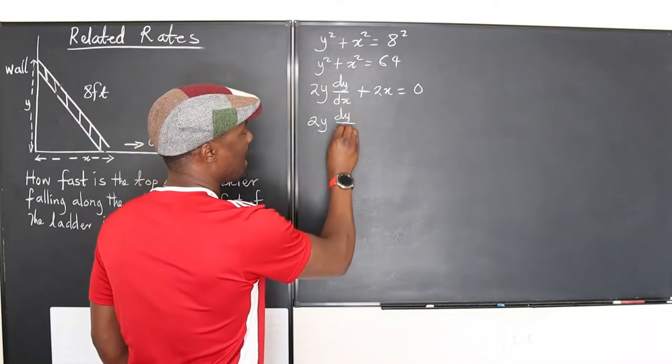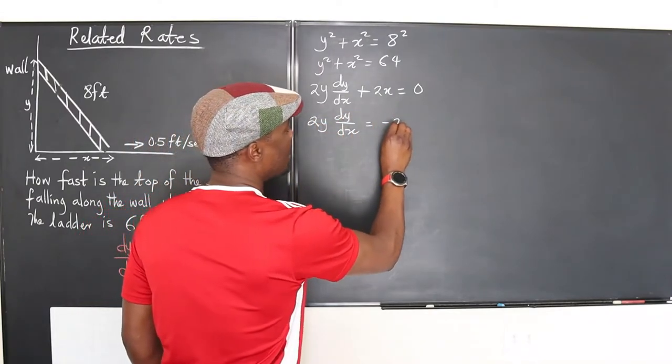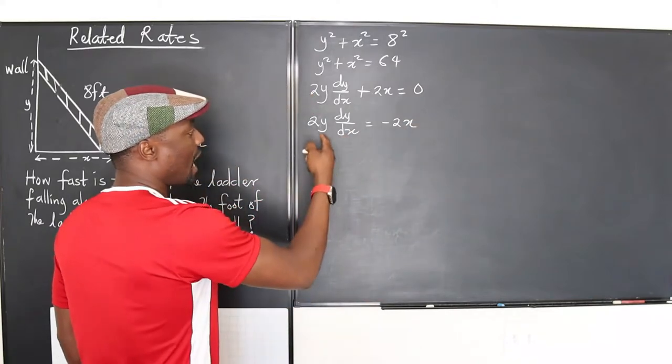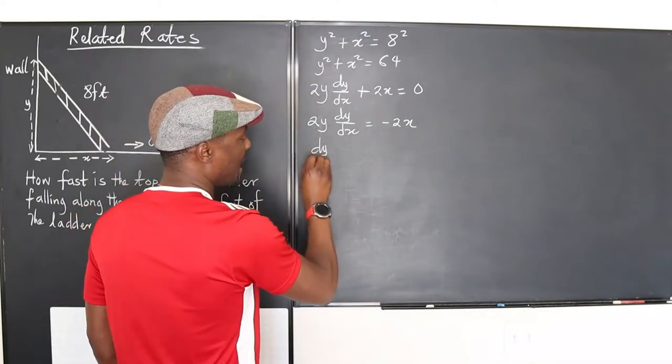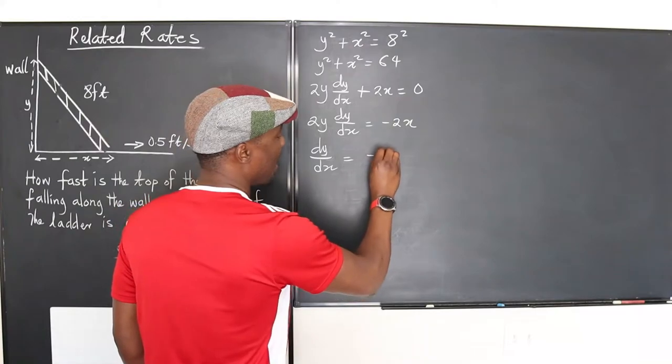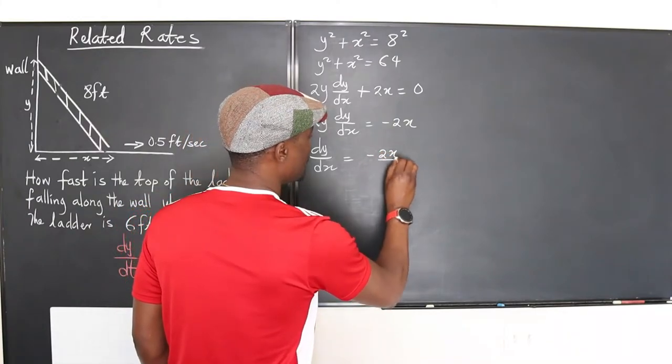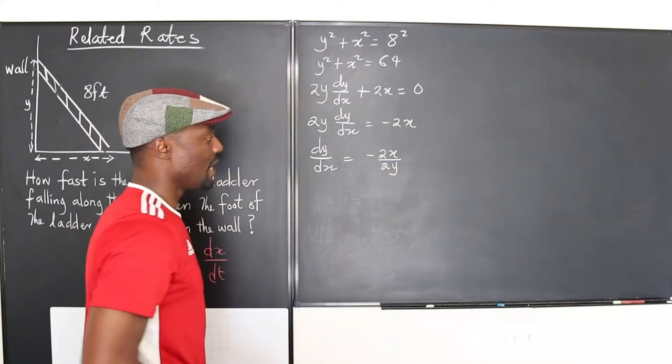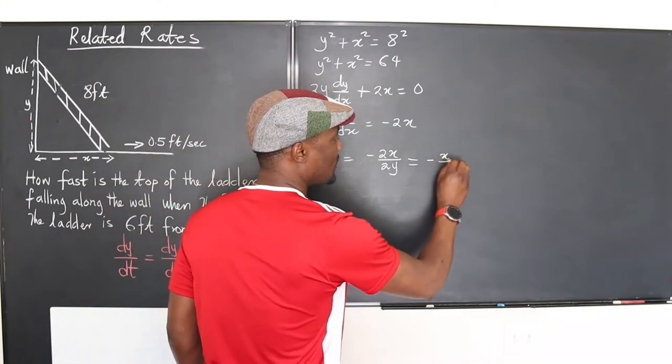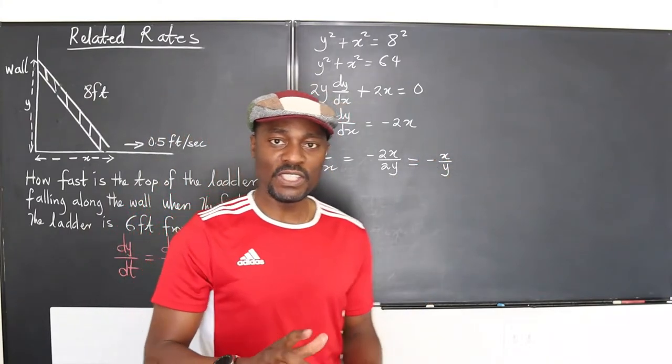Let's move this over to this side. You're going to have 2y dy/dx equals negative 2x. If you isolate dy/dx, you get dy/dx equals negative 2x over 2y, and that simplifies into negative x over y.